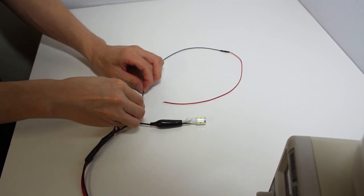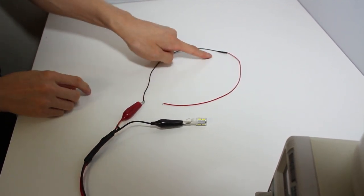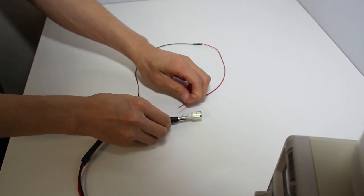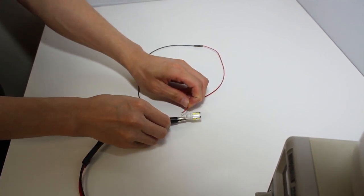However, if we connect the black side of this wire to the positive terminal, the power does not go through. Therefore, the LED does not light up either.